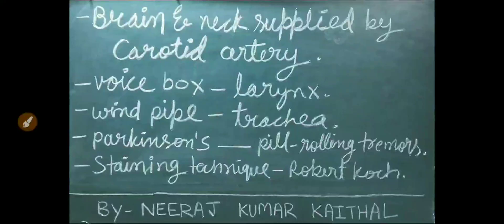Brain and neck are supplied by the carotid artery. Voice box is called larynx. Wind pipe is called trachea. In Parkinson's disease, pill-rolling tremors are present.